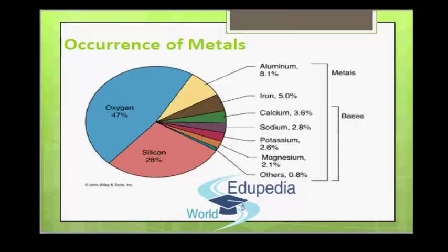An element which is less reactive in the activity series often occurs in the native state in the earth's crust — for example, copper, silver, lead, rhodium, palladium, mercury, platinum, etc. The metals which occur at the top of the activity series never occur in the native state because they are reactive metals — for example, sodium, potassium, calcium, magnesium and aluminium.